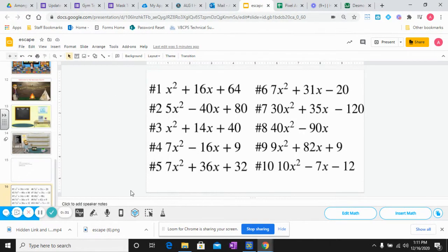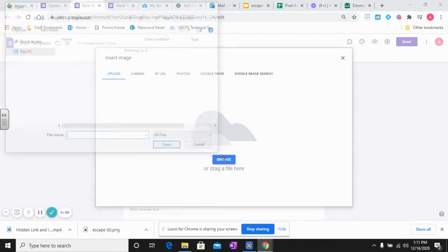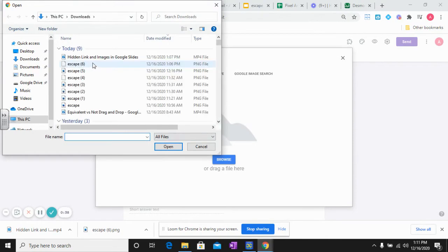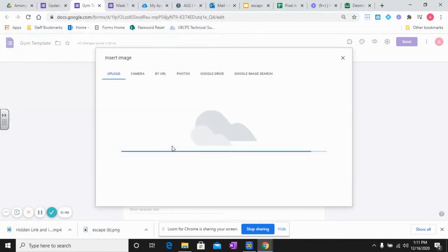Once it downloads, I'll go over to my form and browse for my image, then insert it and it will go right into my form. When I insert my image, now my students can just type their answers in the form.